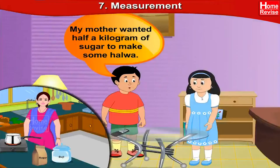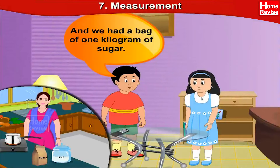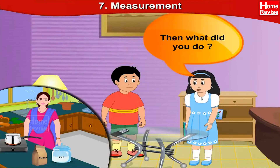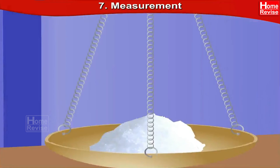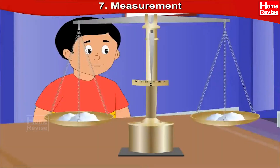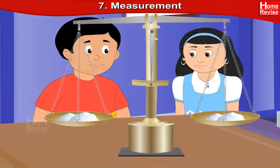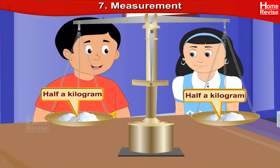Salma, my mother wanted half a kilogram of sugar to make some halwa, and we had a bag of 1 kilogram of sugar. Little by little, I put all the 1 kg sugar into the 2 pans of the balance and brought them to the same level. In this way, I separated the sugar into 2 equal parts. Thus, each pan held half a kilogram of sugar, and that's how I gave my mother half a kilogram of sugar.